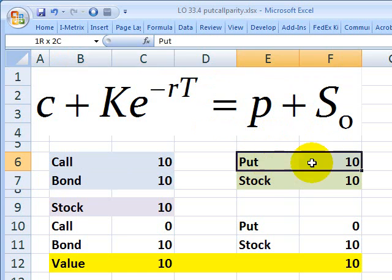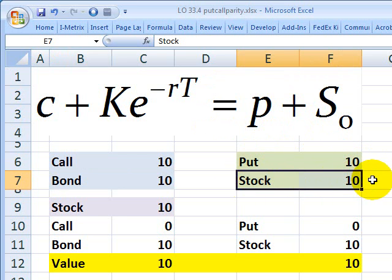On the right, we have another portfolio, a European-style put option with a strike of $10, and a single share of the stock, also priced at $10. That's denoted by S sub-zero. The reason this equality holds is that the payoff of these two portfolios is the same regardless of what happens to the stock.